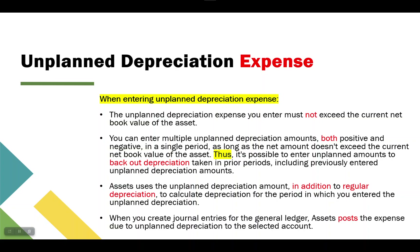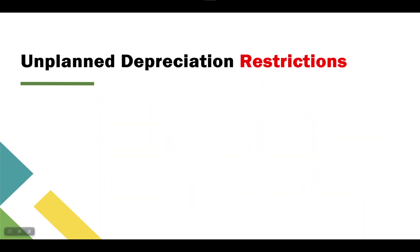When creating journal entries for the GL, Oracle Assets posts the expense due to unplanned depreciation to the selected account. During the unplanned depreciation entry, the system will ask you for the account. Once complete, the system creates journals with a debit and a credit. Depending on the sign — positive or negative — you will see two accounts: the unplanned depreciation expense account and the accumulated depreciation account.